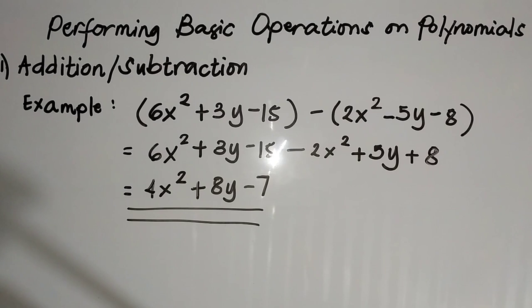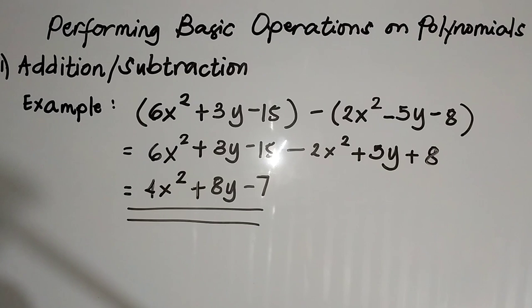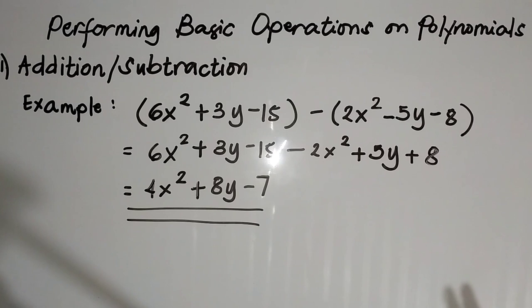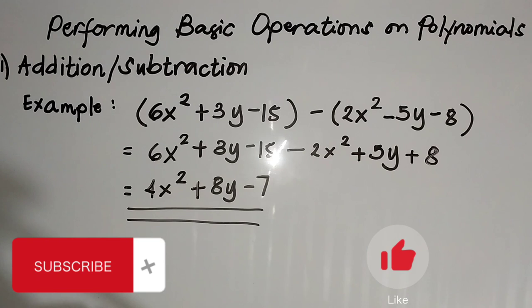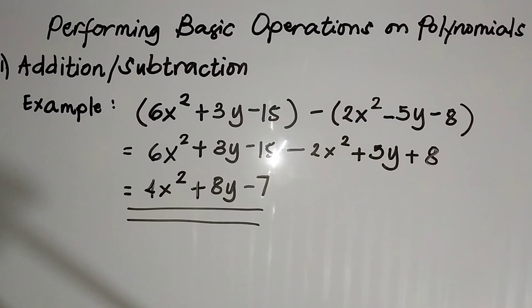So again, you just have to remember the three steps on performing the basic operations of addition and subtraction on polynomials. Una, see if the polynomials are in standard form — kapagka hindi, write it in standard form. Pangalawa, use the distributive property — distribute the negative sign to the subtracting polynomial. And the last step is to combine the like terms — after that, you will get the answer. I hope you have learned something from this video. Please subscribe, like, and click the bell button so you will be updated every time I upload a new video tutorial. Thank you!